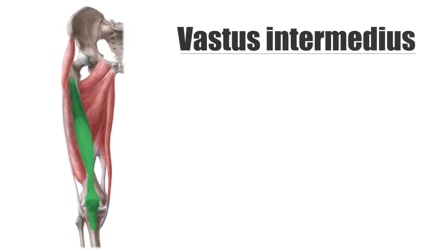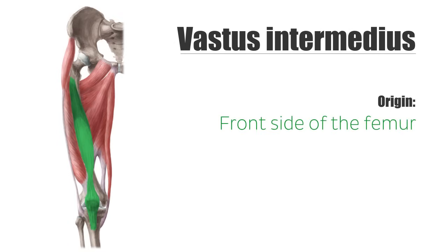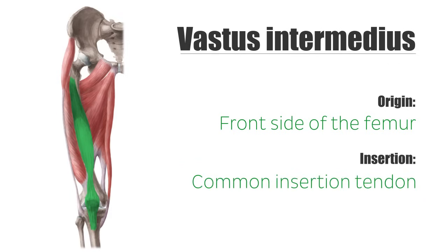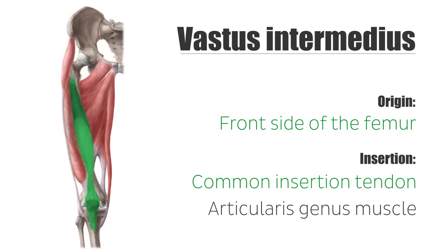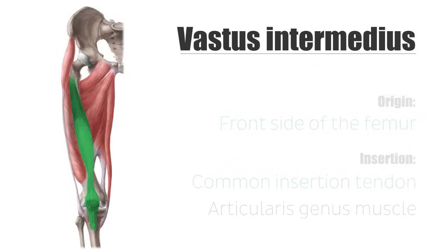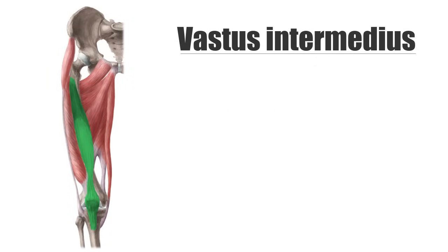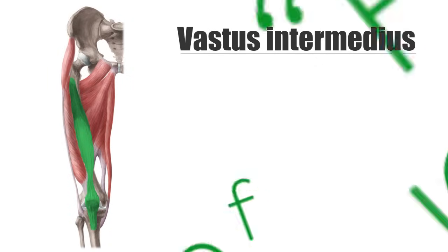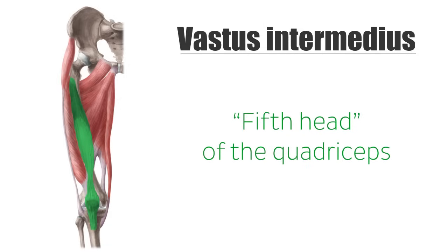The vastus intermedius muscle begins at the front side of the femur and ends in the common insertion tendon. At the height of the patellar base, a small part splits off and inserts at the suprapatellar recess of the knee joint capsule, also known as the articularis genus muscle. Even though it does not count as an independent muscle, it is sometimes considered as the fifth head of the quadriceps.